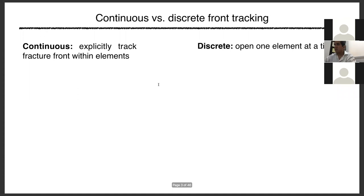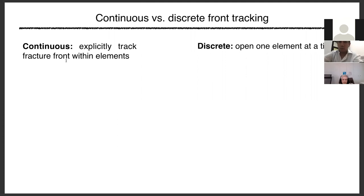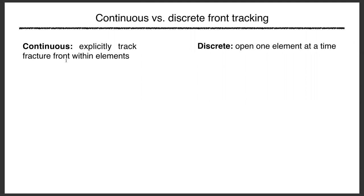We're talking about hydraulic fracturing — continuous versus discrete front tracking. In the continuous approach, you explicitly track the fracture front, so your fracture length is a continuous function and can sit anywhere within a fixed mesh element. In the discrete approach, you open one element at a time; your fracture length jumps by one element length at a time.